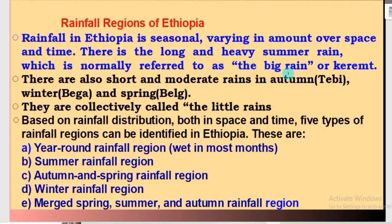There is a big rain in summer, or Kiremt season. In Ethiopia, there are also short and moderate rains in three seasons, which are known as Autumn, or Bega in winter, and spring, or Belg. They are collectively called the little rains, recorded in Ethiopia during these three seasons.